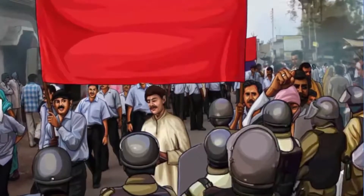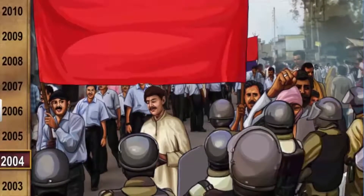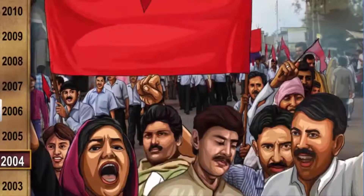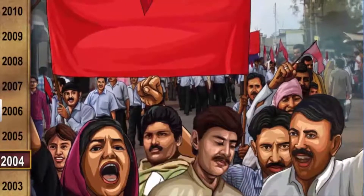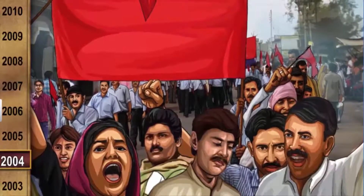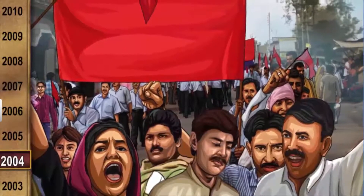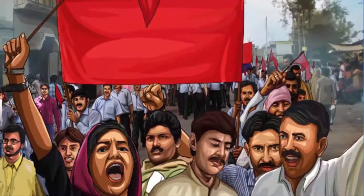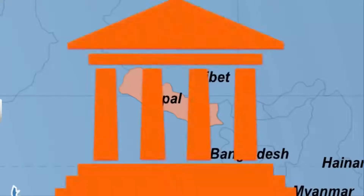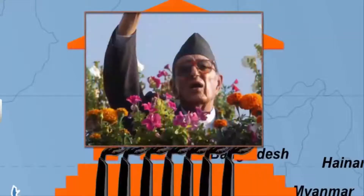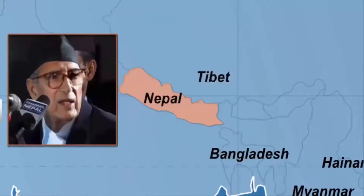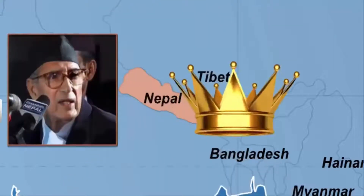On 21st April 2006, half a million protestors served a four-day ultimatum to the king. The movement leaders rejected the half-hearted concessions made by the king and stuck to their demands. Eventually, Nepal formed an interim government and the SPA chose Girija Prasad Koirala as the new prime minister. The restored parliament in Nepal passed laws taking away most of the powers from the king.